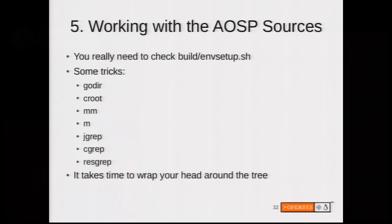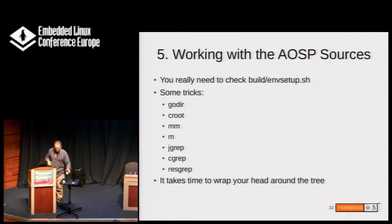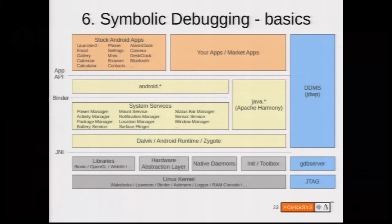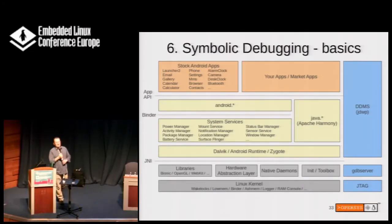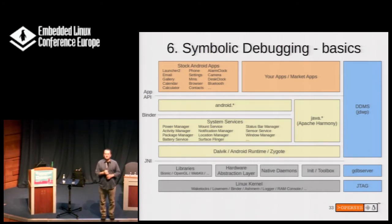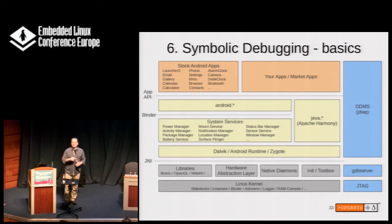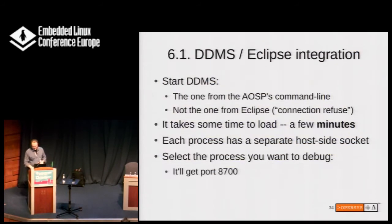Android 4.3 is about seven or eight gigs of sources, so the tree is big and it takes a little time to get the hang of it. The major problem with Android debugging is you can't just use one debugger. DDMS is used to interface with Dalvik. You've got GDB and gdbserver for the native layer, and if you're doing kernel work, obviously JTAG. The obvious question is how do you actually debug the framework with Eclipse - that's the really interesting part.